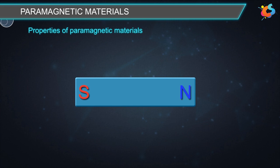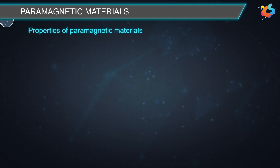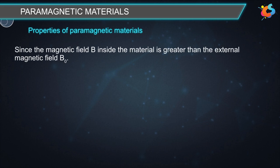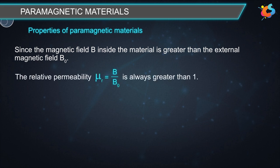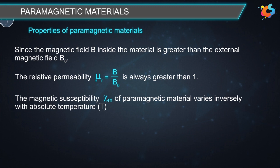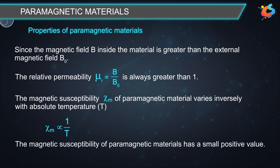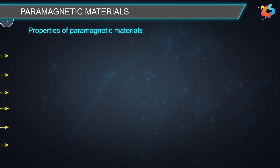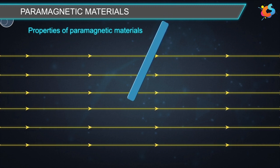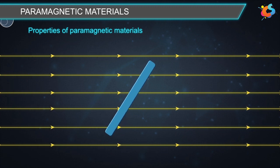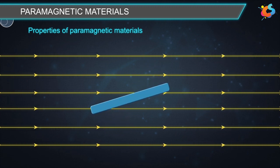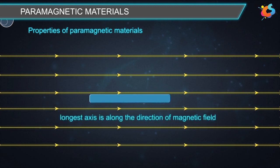The magnetic field B inside the material is more than the external magnetic field B₀. Third, the relative permeability µ_r = B/B₀ is always greater than 1. The magnetic susceptibility χ_m of paramagnetic material varies inversely with absolute temperature (χ_m ∝ 1/T), and has a small positive value. Fourth, when a paramagnetic rod is suspended freely in a strong uniform magnetic field, the rod comes to rest with its longest axis aligned along the direction of the magnetic field.